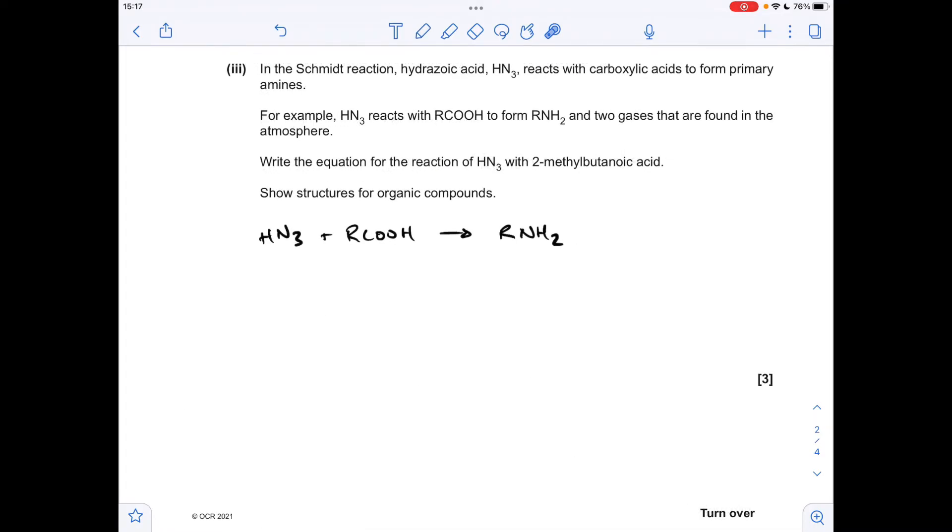Moving on to part 3 with this unfamiliar reaction where hydrazoic acid reacts with carboxylic acids to form primary amines. It forms two gases found in the atmosphere. With the atoms left over, two Ns and C with two Os, the obvious thing is carbon dioxide and nitrogen. Now applying it to the actual carboxylic acid mentioned, 2-methylbutanoic acid.